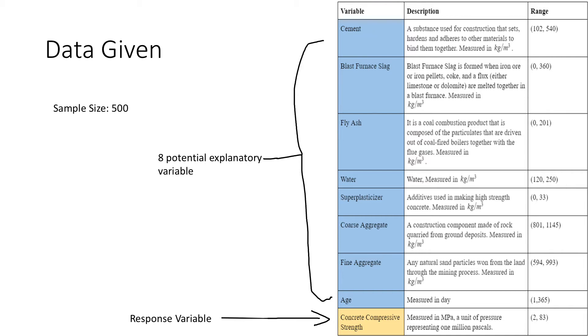Blast furnace slag refers to iron ore or iron pellets made in the blast furnace. Fly ash is a coal combustion product that is composed of particulates driven out of the coal fired boilers together with the flue gases. Water, super plasticizer, which is used for high strength concrete. Coarse aggregate, a construction component made of rock from ground deposits. Fine aggregate, which is any natural sand particles worn from the land through the mining process. And age, which just refers to the days which the concrete has existed or been made.